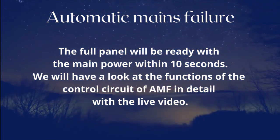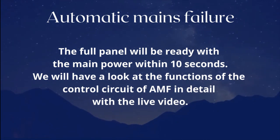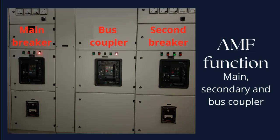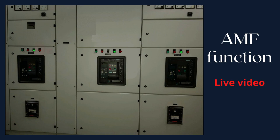We will have a look at the functions of the control circuit of AMF in detail with the live video. The function of the AMF system in a panel with main, secondary, and bus coupler: the main breaker closes with main power; main power fails; no power in the complete panel; the generator starts; power reaches the secondary side; the secondary breaker closes; main and bus coupler breakers open. When power restores, the secondary breaker opens, the main breaker closes, and after two seconds the bus coupler will close.